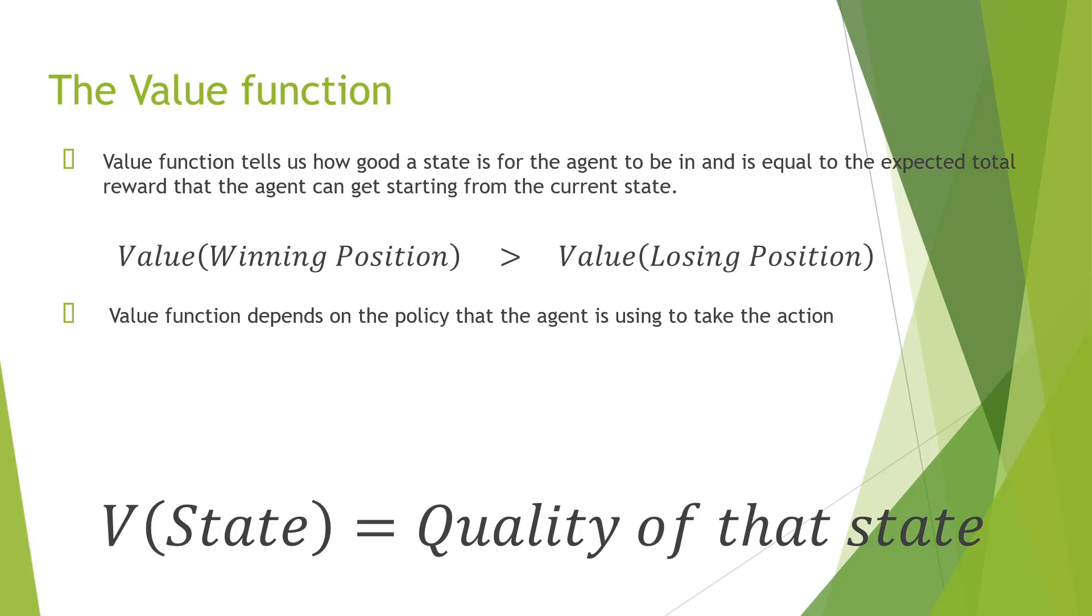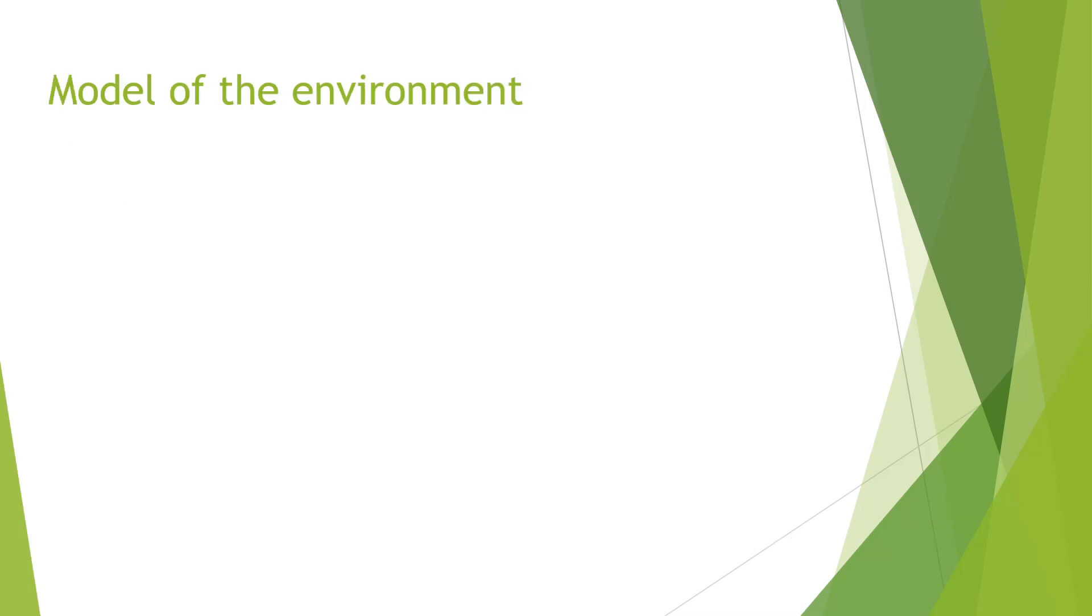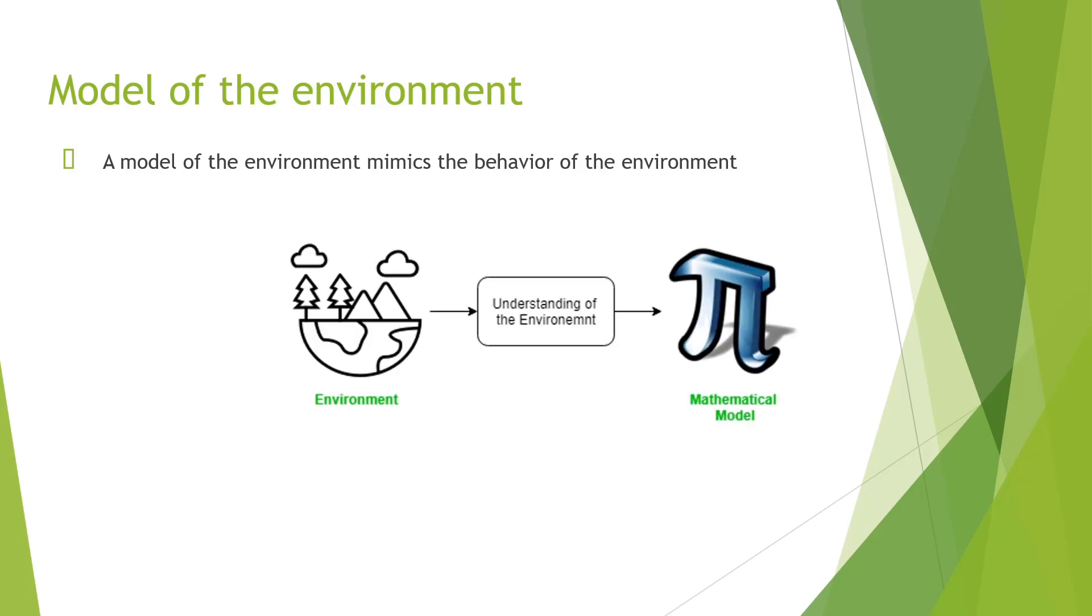A model of the environment can be understood as a function that mimics the characteristics of the actual environment. It is the mathematical representation of the actual environment. It is very difficult to come up with a good model of the environment as it might require a lot of understanding of the environment. Later in the course we'll learn techniques that can work without using any model of the environment and thus avoid the difficult task altogether.